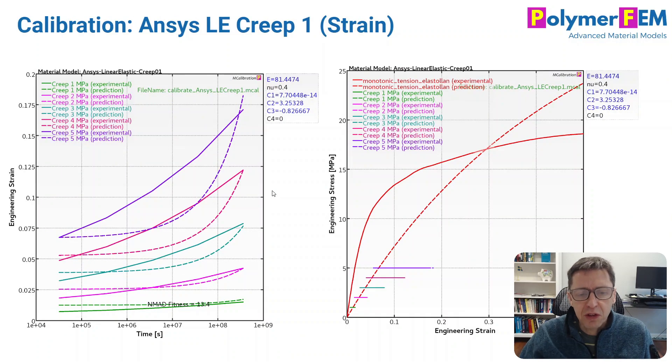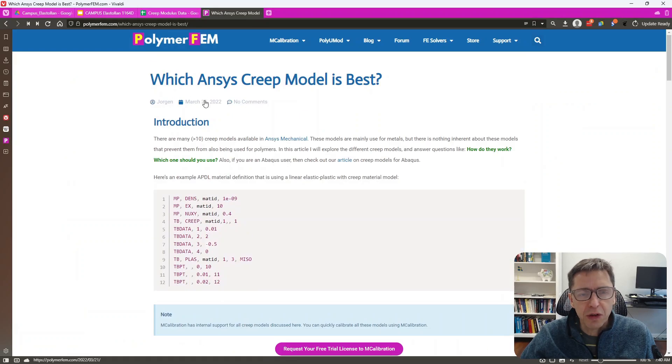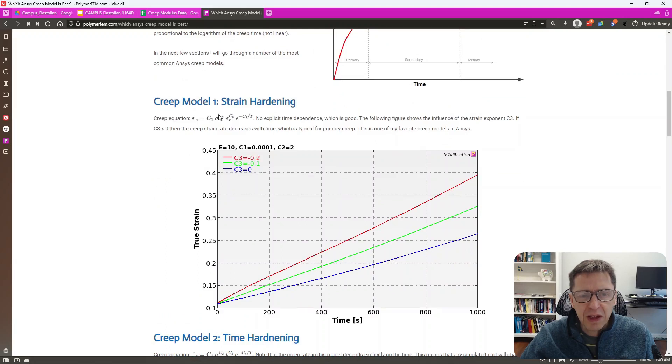So I'm going to go through this in a slow and systematic way. I'm going to start with an ANSYS linear elastic with a strain-based creep model. A while ago I created an article called 'Which ANSYS Creep Model is the Best?' And in that one, I recommended this strain model. So here's the equation for it.